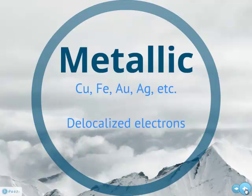The next strongest is a thing called metallic forces. Metallic forces would be copper, iron, gold, silver, anything in our transition metals — anything metallic. Even our alkaline metals, alkaline earth metals. These have what we call delocalized electrons; they're kind of like sheets, just a sea of electrons. That's metallic forces. Really high melting points on those too.